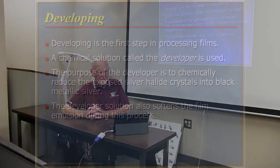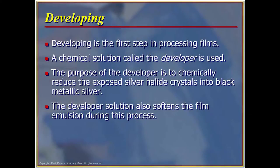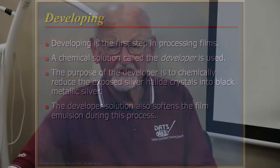Developing is the first step in processing, and a chemical solution called the developer is used. The purpose of the developer is to chemically react and reduce the exposed silver halide crystals into black metallic silver. This developer solution also softens the film emulsion during the process.